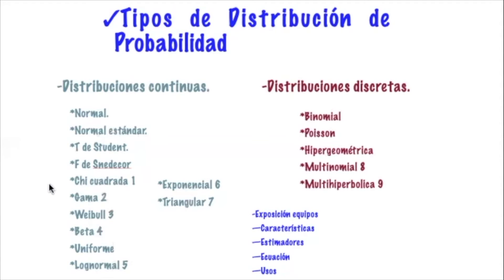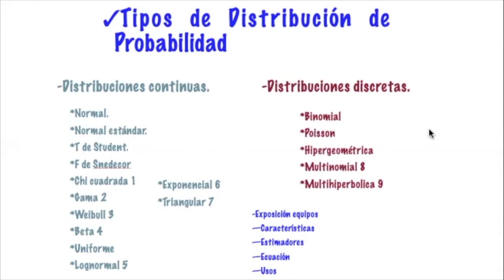Las distribuciones continuas van desde cero hasta valores muy alejados, con datos reales. La única que maneja valores no reales con punto medio en cero es la normal estándar, donde se estandariza el valor para ver los límites de la curva a izquierda o derecha del cero. Por otro lado, las distribuciones discretas incluyen: la binomial, la Poisson, la hipergeométrica, la multinomial y la multihiperbólica.